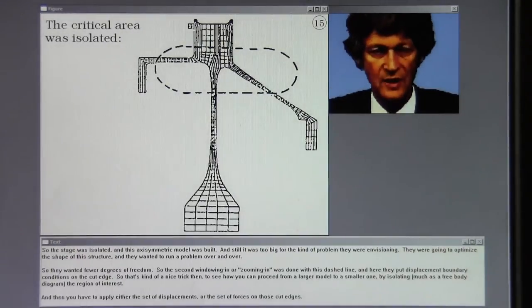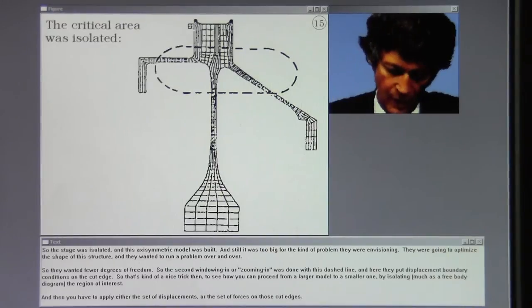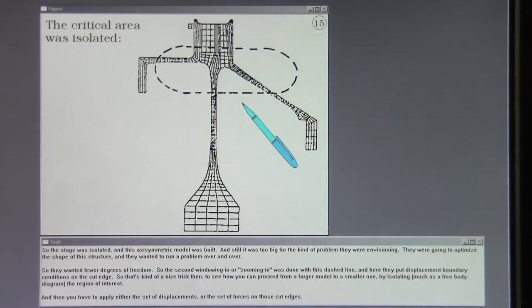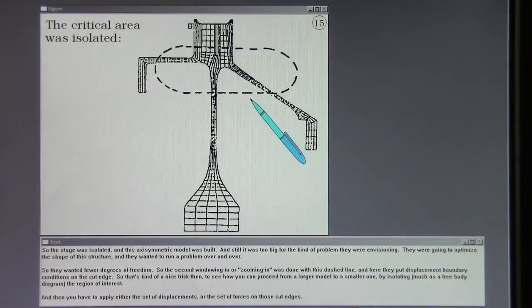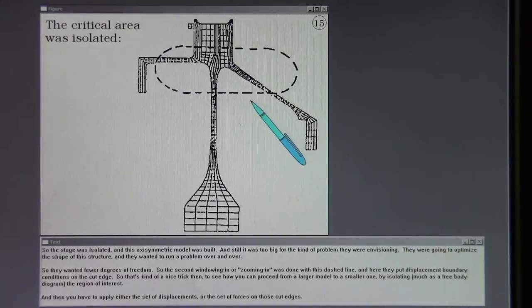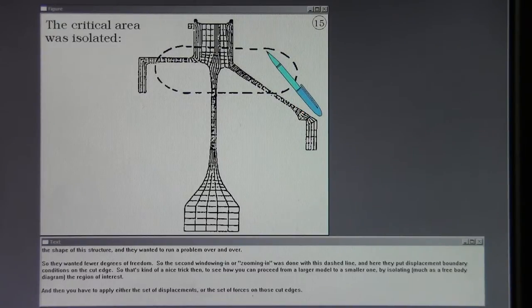Well, they decided to isolate one stage of the compressor by this dashed line, and then to use a forced boundary condition on the broken edge of that system. So the stage was isolated, and this axisymmetric model was built. And still it was too big for the kind of problem they were envisioning. They were going to optimize the shape of this structure, and they wanted to run a problem over and over. So they wanted fewer degrees of freedom. So the second windowing in or zooming in was done with this dashed line, and here they put displacement boundary conditions on the cut edge. So that's kind of a nice trick then to see how you can proceed from a larger model to a smaller one by isolating, much as a free body diagram, the region of interest. And then you have to apply either the set of displacements or the set of forces on those cut edges.